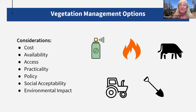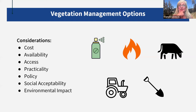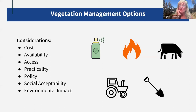Some background: in Sonoma County we had a catastrophic fire in 2017, and we found we weren't prepared at all when it comes to vegetation management. We proceeded to have fires in 2019 and 2020 as well. I've taken an interest in leading an effort in our counties to look at vegetation management options and all the tools in the toolbox. When thinking about managing vegetation, you want to consider the cost, availability, access, practicality, policies, social acceptability, and environmental impact of tools like chemical, prescribed fire, mechanical, or biological control — which is grazing.